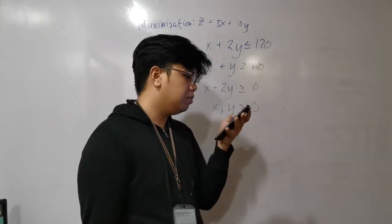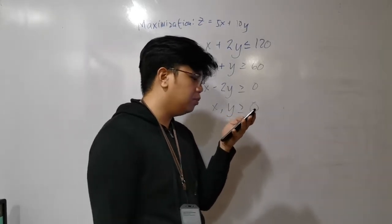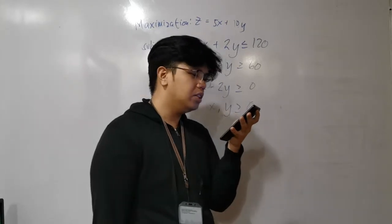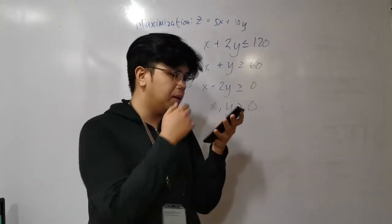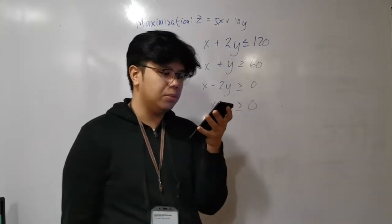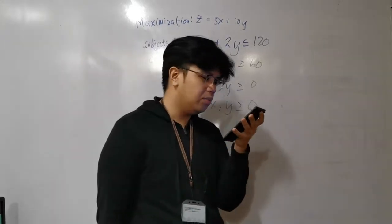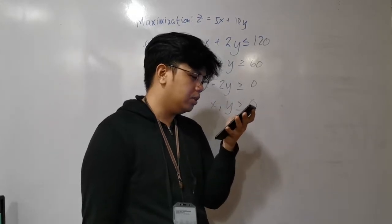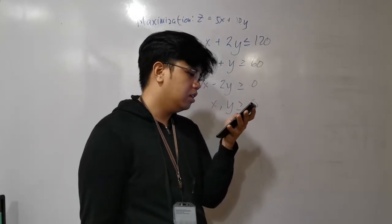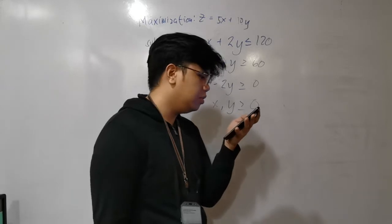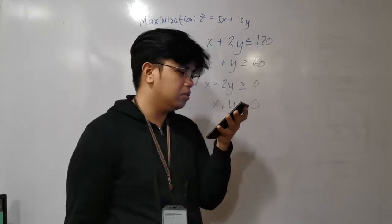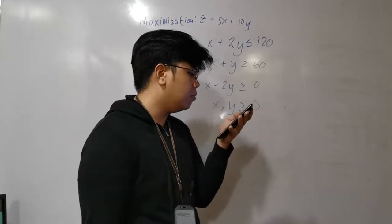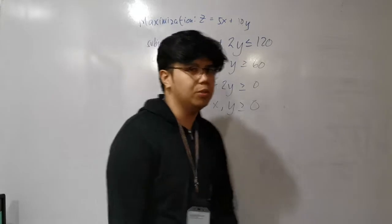In the case of the simplex method, the presence of multiple optimal solutions is specified by a condition under which a non-basic variable in the last simplex table displays the optimal solution and the amount of contribution is zero. The decision maker will use the most suitable set of the basic solution as the solution of the linear program when the problem has multiple optimal solutions.